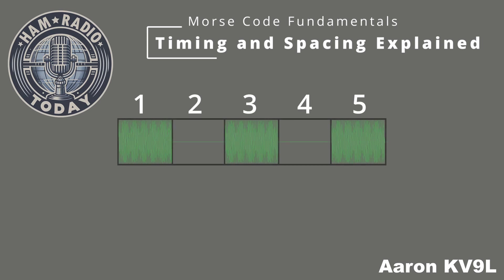Now let's refer back to the waveform for the letter S, which consists of three dits. Notice the small gaps between each dit? These are called intra-character spaces, and they're just as important as the dits themselves. The intra-character space is always equal to one unit of time, whether it's between dits, dahs, or a combination of both. This brief pause ensures that each sound remains distinct, preventing the dits and dahs from blending together into a single tone.